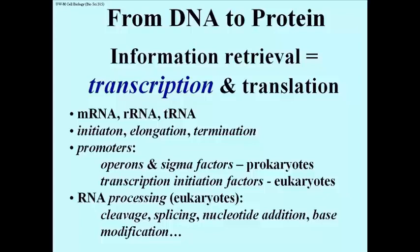There are three main kinds of RNA: messenger, ribosomal, and transfer RNA. The transcription of any kind of RNA occurs in three steps called initiation, elongation, and termination.